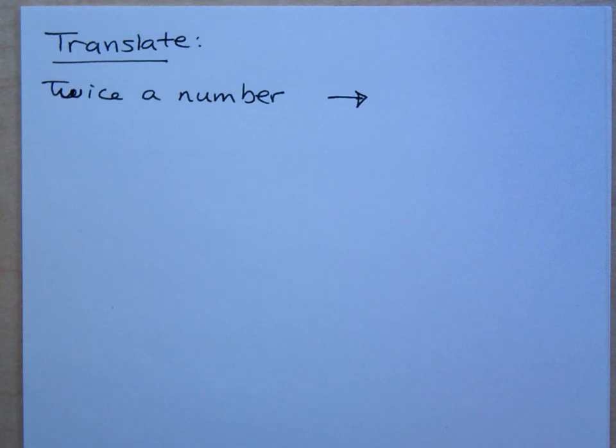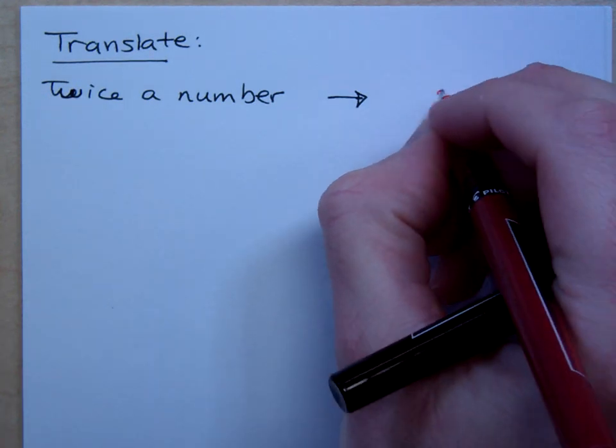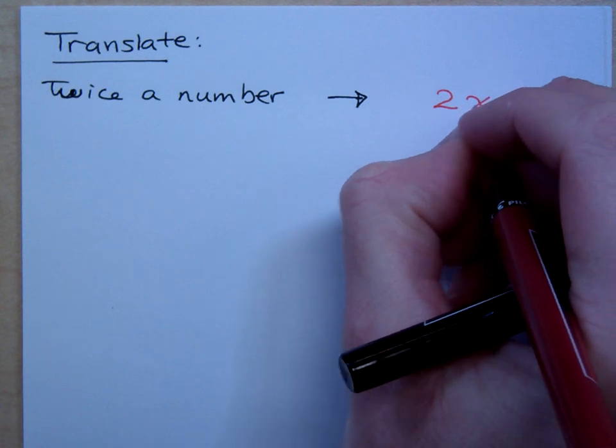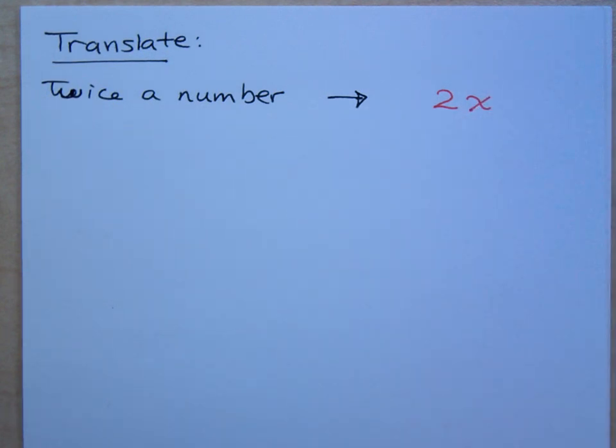When you see twice, that means two times something. So if we're doing twice a number, that just means 2x, right?